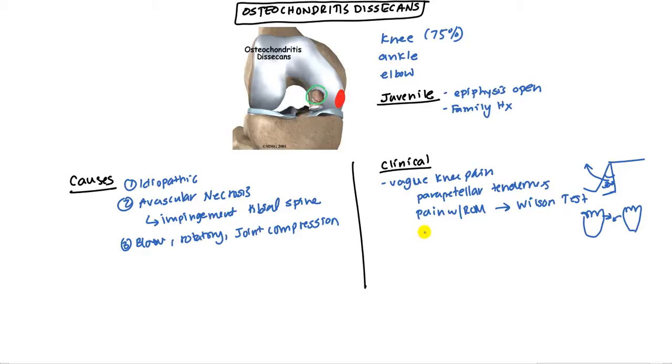You can also get quadriceps atrophy because when they feel pain they use that muscle less. Once you have a loose fragment, you get symptoms associated with that - crepitations, popping sensation, locking, and suddenly giving way. This is the loose fragment getting caught in the articular surface. If there is a fragment this becomes classified as an unstable condition.